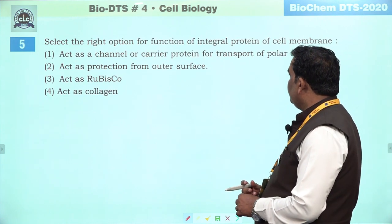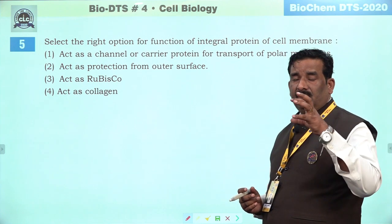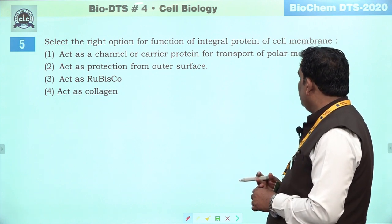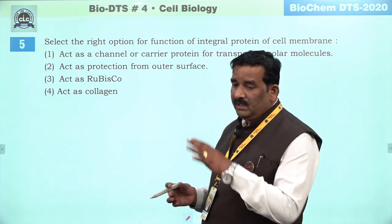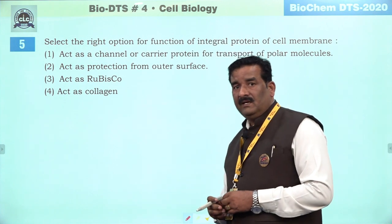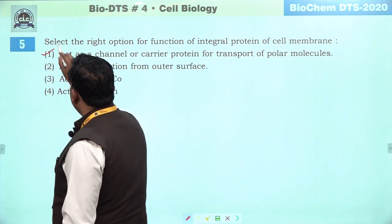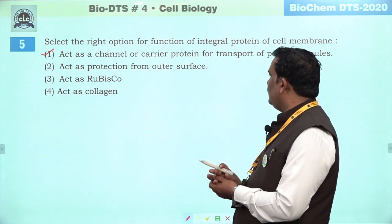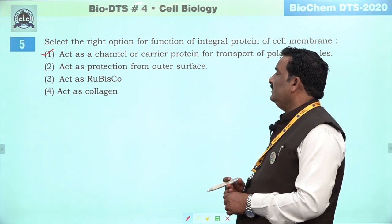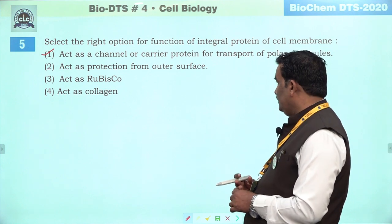Next question: select the right option for the function of integral protein of the cell membrane. Integral protein jo membrane ke andar hai, uska kya function hona chahiye. Act as a channel or carrier protein for the transport of polar molecules — polar molecules normal diffusion nahi karte membrane se, then they require carrier proteins or channel proteins. That's why first apna right answer banta hai. Act as protection from outer surface — to internal nahi, peripheral protein production kar sakti hai. Rubisco ki tarah kaam karna, ya collagen ki tarah kaam karna — yeh isse relate nahi. First is the right answer.